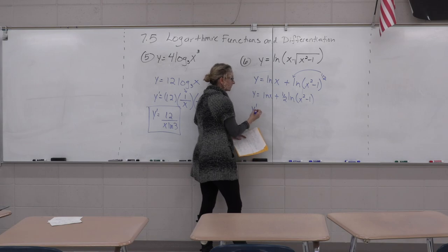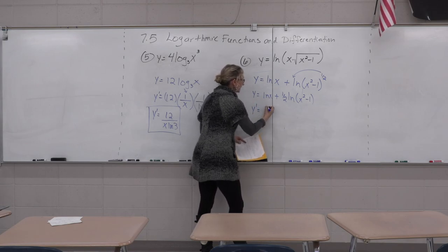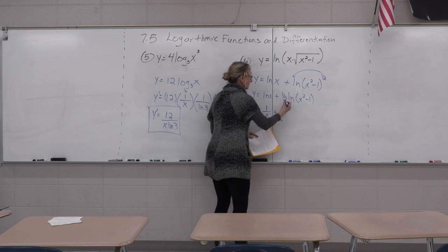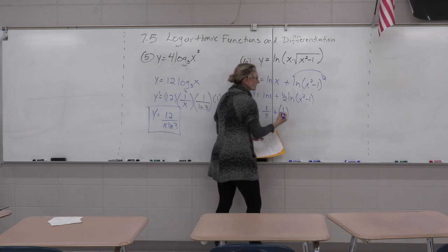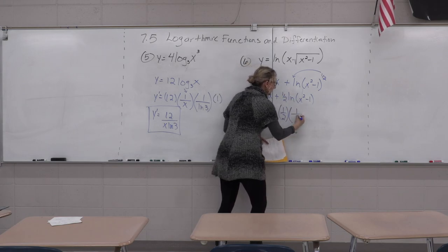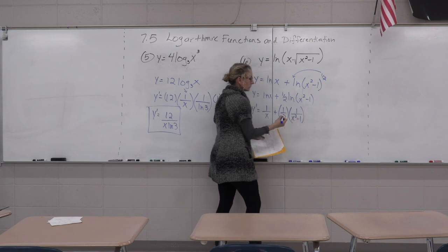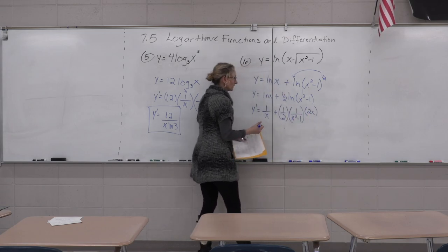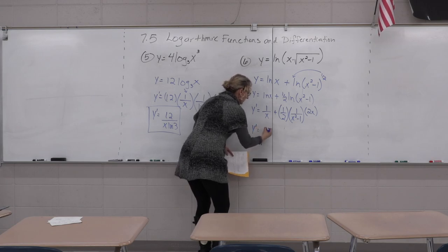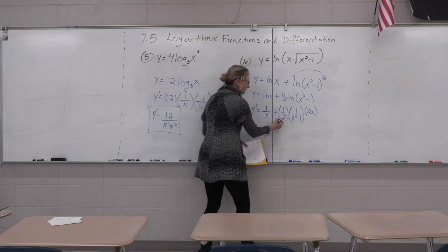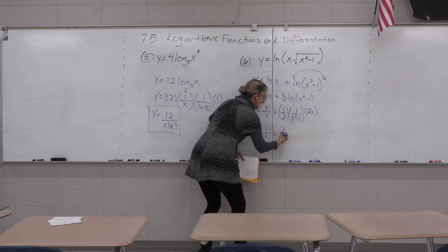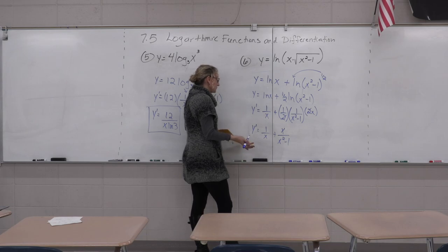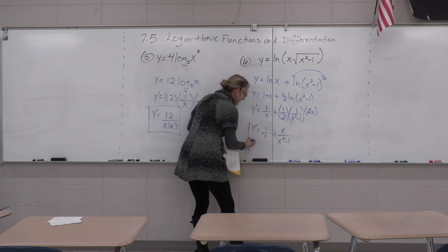Now differentiate: y prime equals one over x plus one half times one over x squared minus one times two x. The two cancels, giving y prime equals one divided by x plus x divided by x squared minus one. You can make a common denominator or leave it as is.